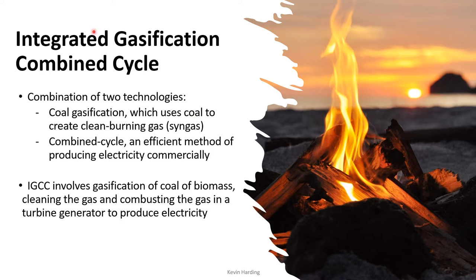The next technology is the Integrated Gasification Combined Cycle (IGCC), a combination of two technologies. The first is coal gasification — using coal to create a clean-burning syngas. The second is the combined cycle — converting that gas into electricity. The process involves gasifying coal or biomass, cleaning that gas, and then combusting it in a turbine generator to produce electricity.